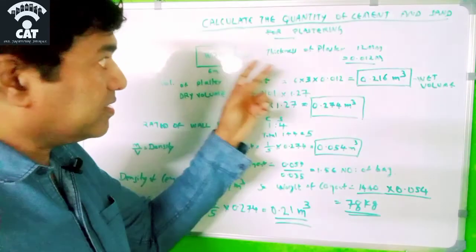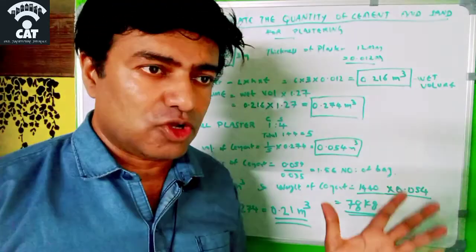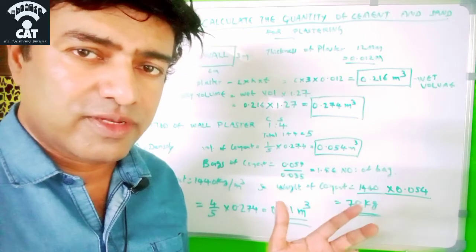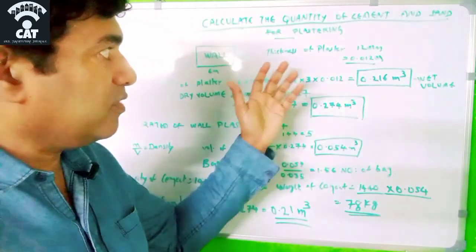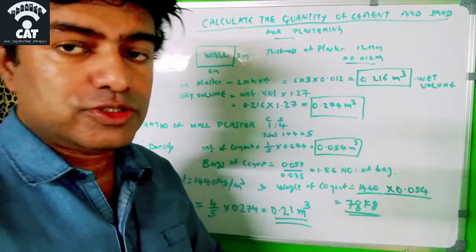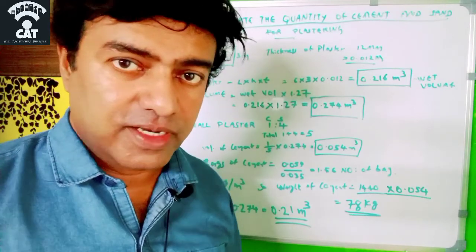The thickness of the plaster normally starts from 12mm to 15mm. Here we will take 12mm, that is 0.012 meters when converted.